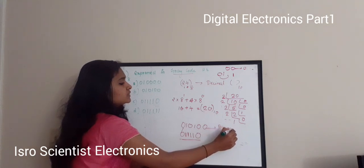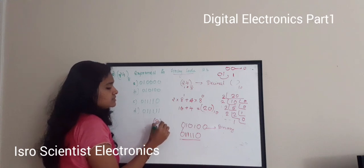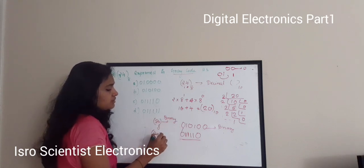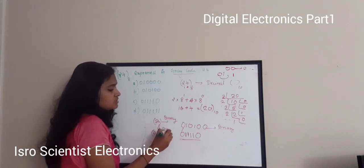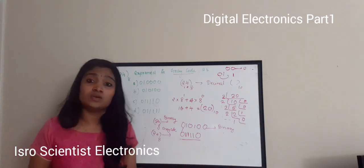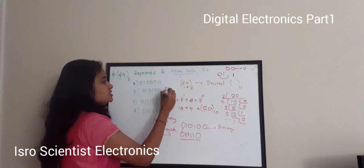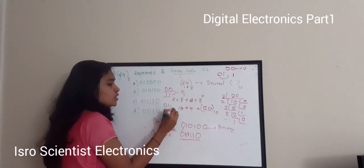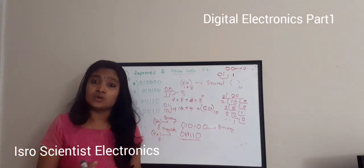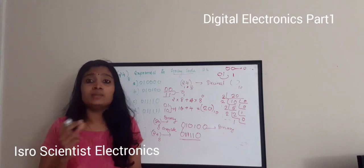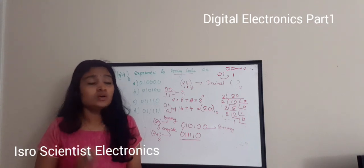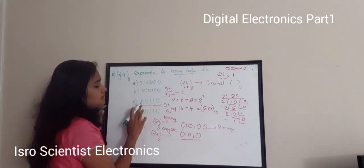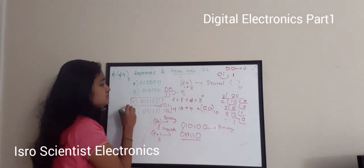So this is the binary and the Gray code representation of 24 in octal. The rule is: if 0,0 or 1,1 appear consecutively, the Gray code output is 0; if 0,1 or 1,0 appear, the output is 1. We are checking for a 1-bit change between consecutive numbers. The answer for this question is option C.